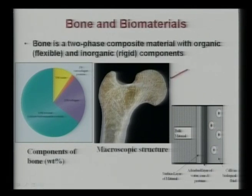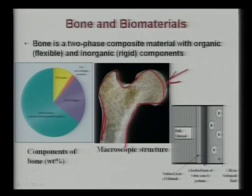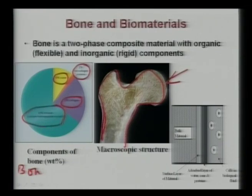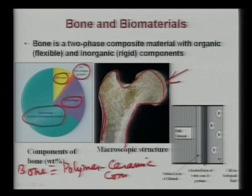Regarding bone and biomaterials — what is the typical composition of a bone? This shows the macroscopic structure of a typical human bone (part of a femur). The different components are: 65 percent calcium phosphate — that is calcium hydroxyapatite mineral — along with 23 percent collagen, which is a polymeric protein-rich material, then 2 percent non-collagen-type proteins, and 10 percent water. From a structural point of view, bone is essentially a polymer-ceramic composite.